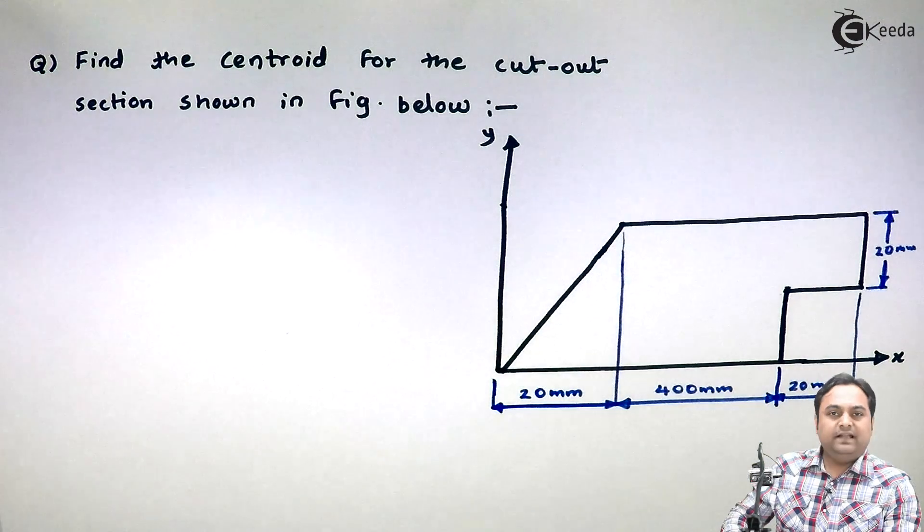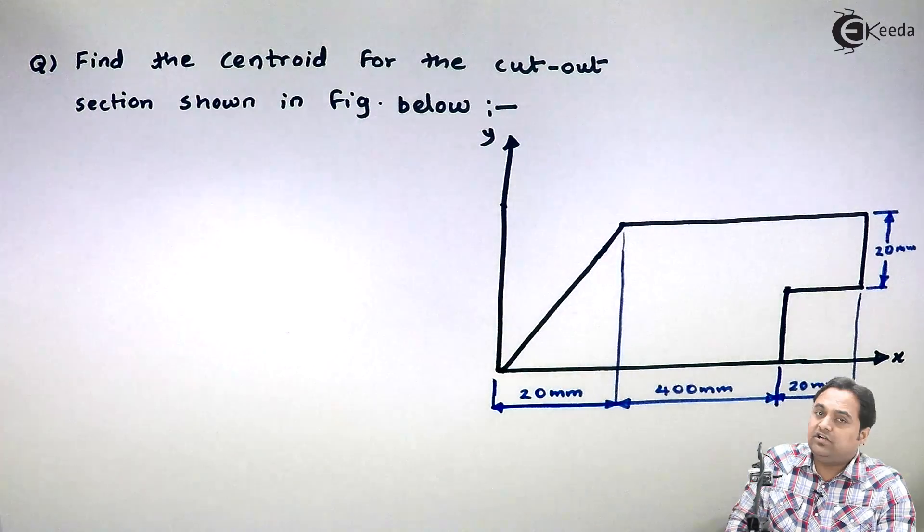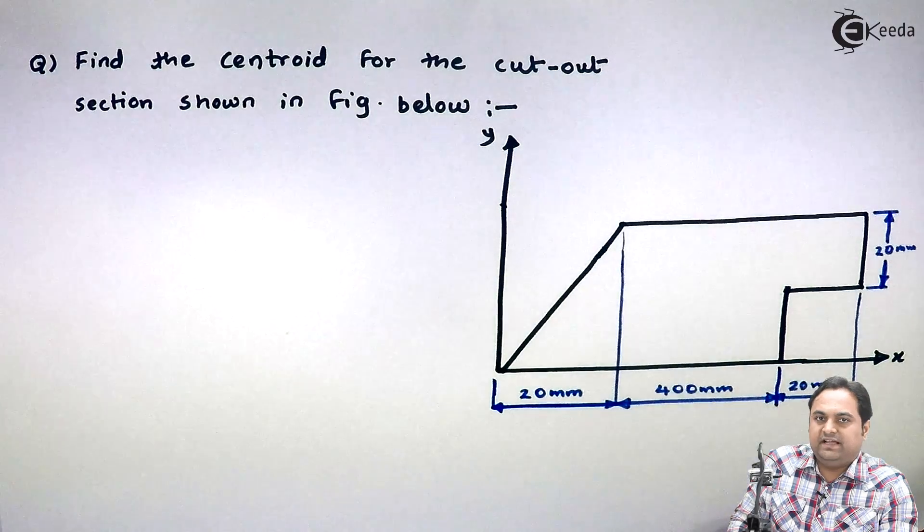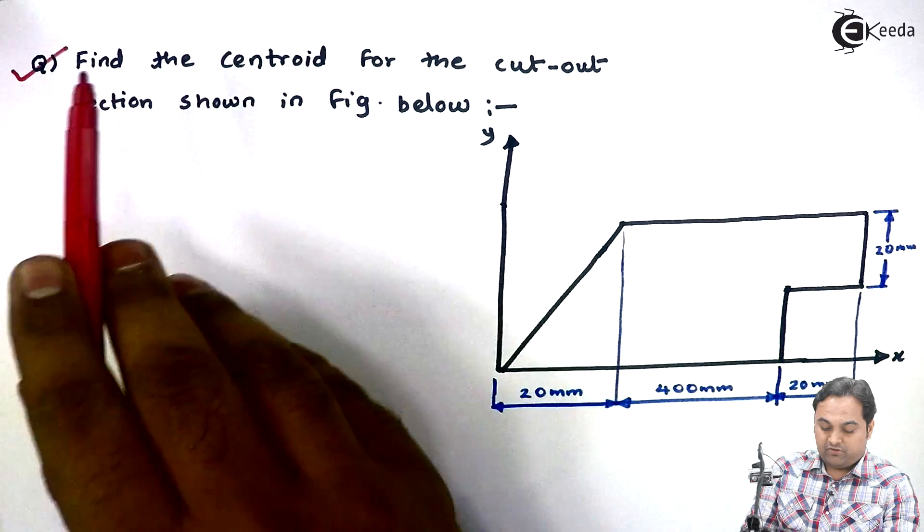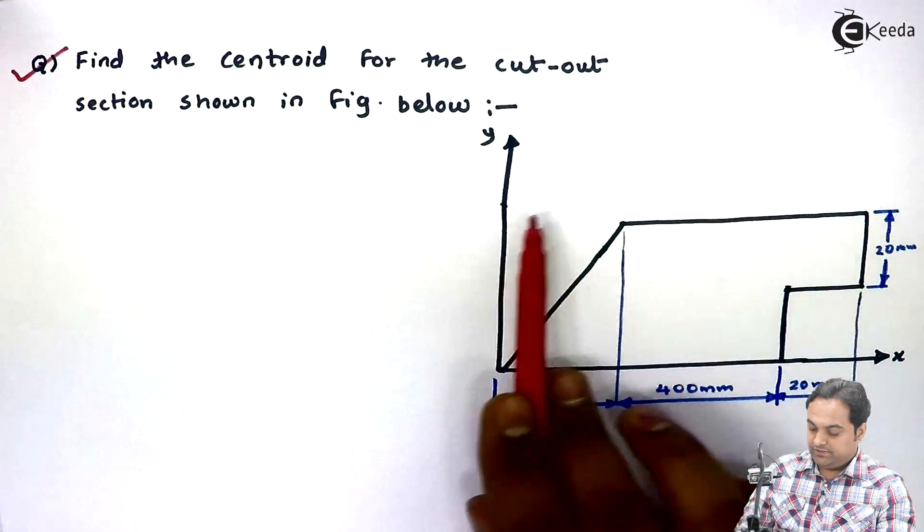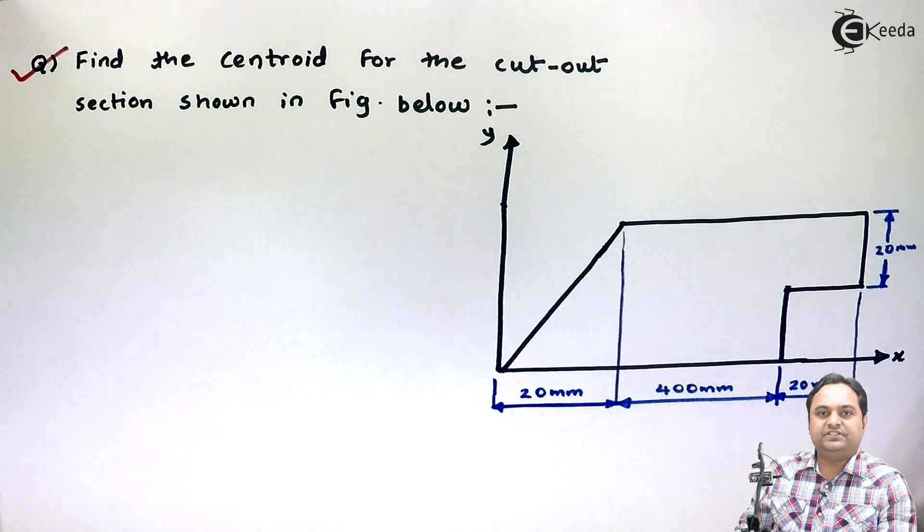Hello friends, let's take a problem on a section which is a cutout section and we will find the centroid for such a diagram. So here is the question in front of us: find the centroid for the cutout section shown in figure below. Here the diagram is given. For this figure we have to find the centroid.